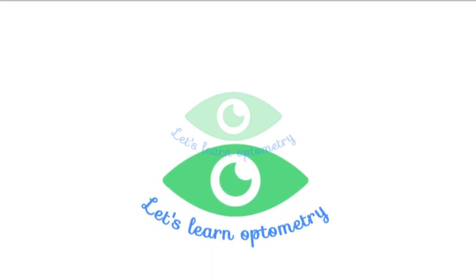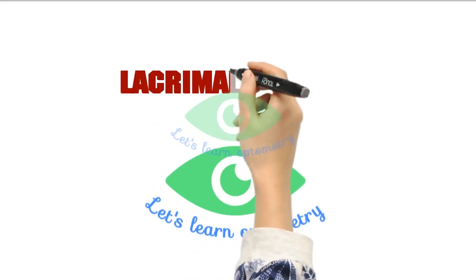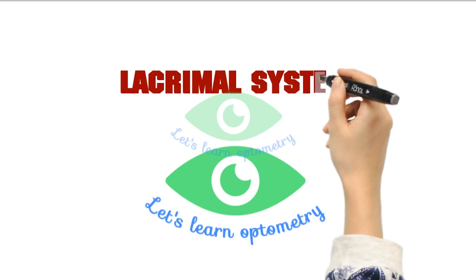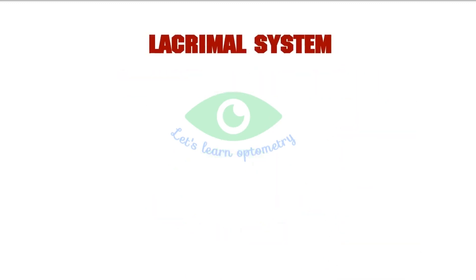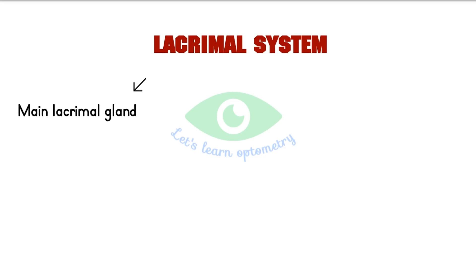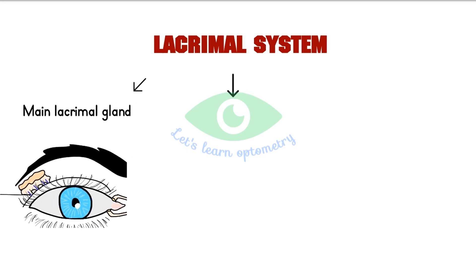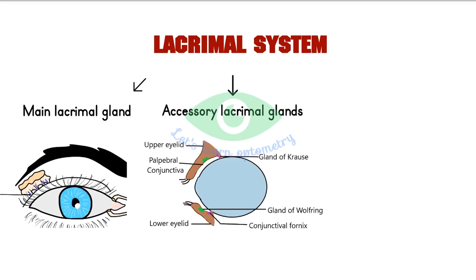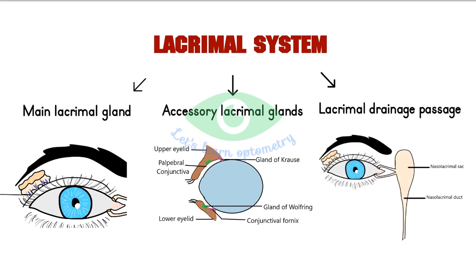Hello all, welcome to Let's Learn Optometry. In this video, we will learn about the anatomy of the lacrimal system. The lacrimal apparatus consists of three sections: the main lacrimal gland, the accessory lacrimal glands, and the lacrimal passages.